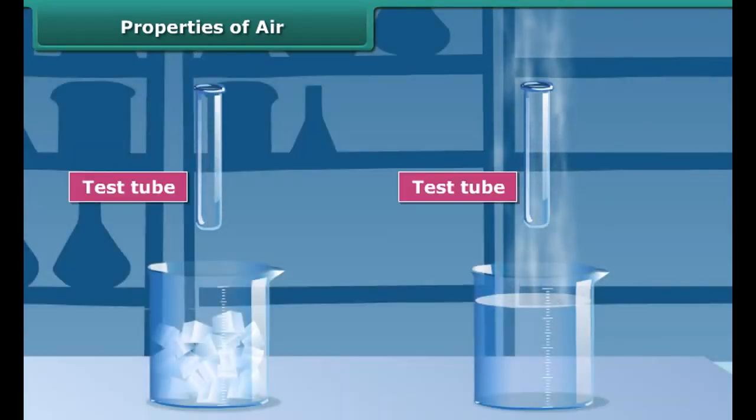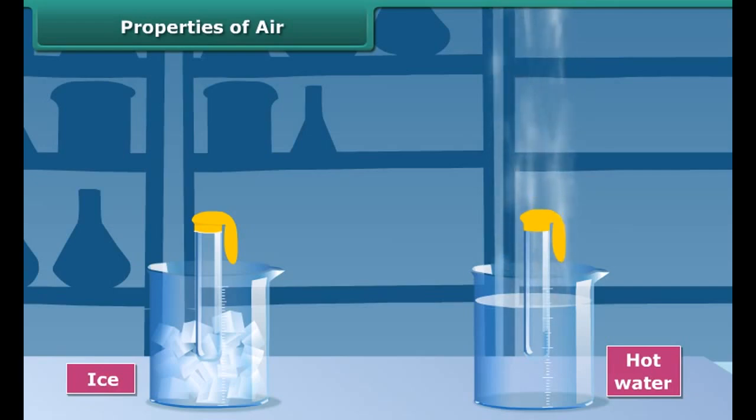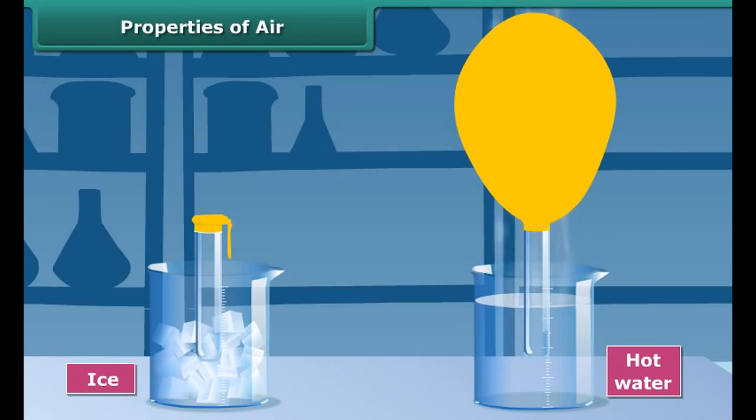Now take two empty test tubes and place a balloon over the mouth of each bottle. Put one test tube in a pan of hot water and the other one in a pan with ice. Observe carefully. The balloon on the test tube in hot water begins to inflate. This is because the hot water heats the air inside test tube and the ice cools the air in the other. When air gets warm, it expands and rises, which inflates the balloon. On the other hand, cool air contracts, causing the other balloon to shrink.